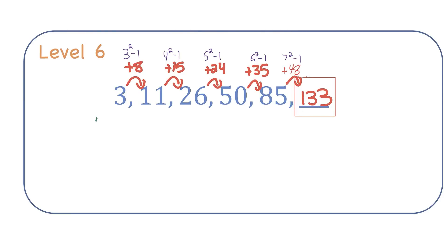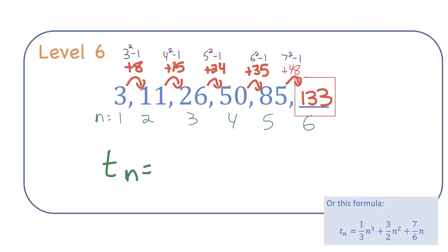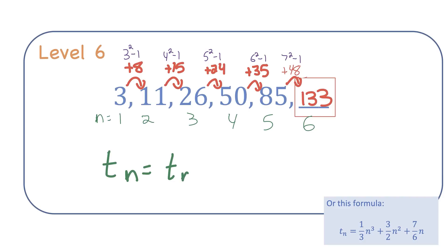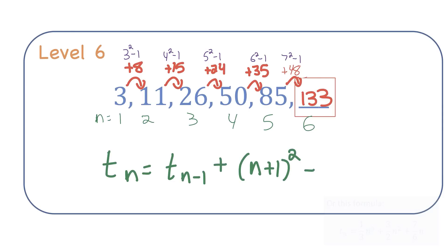If I number the terms in this sequence, I can show you a formula that generates the value of any term. The formula for any term takes the previous term and adds n plus 1 squared, then subtracts 1.